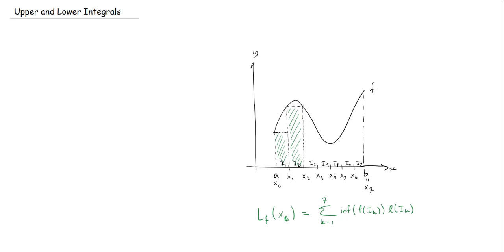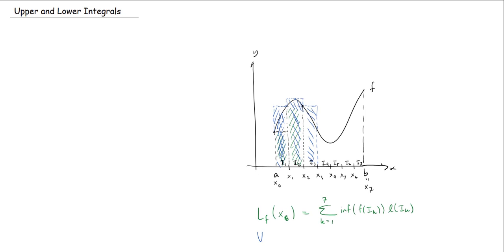I can also find the upper sum. I come over here and take the supremum on each of these intervals. The supremum on the first interval is up here, so I get a much taller rectangle. Then over here the supremum is on that end. My upper sum U(f, X) is the same formula except instead of the infimum I take the supremum of the values of f on each Iₖ.